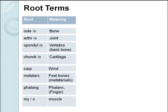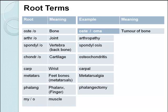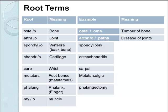Let's look at some word examples. Osteoma: osteo is bone, and oma means tumour — so an osteoma is a tumour of the bone. Arthropathy: arthro is joint, and pathy means disease — so arthropathy means disease of the joints. Spondylosis: spondyl is your vertebrae, and osis means condition or disorder — so spondylosis is a condition or disorder of the vertebrae.